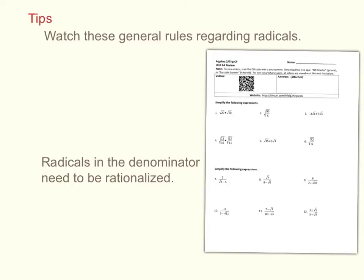All right, here's the first page of your chapter 4A review. The first thing I want to do is discuss some general rules regarding radicals: multiplying radicals, dividing radicals, and simplifying radicals. The second thing I want to talk about is how radicals in the denominator of any fraction need to be rationalized. There are a couple of methods you're going to use to do that.